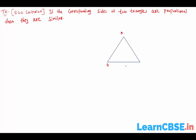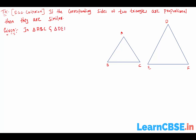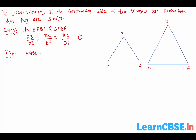Triangle ABC and Triangle DEF. Let me write the given. In triangle ABC and triangle DEF, AB by DE equals BC by EF equals AC by DF. That means the three sides of triangle ABC are proportional to the three sides of triangle DEF. So, required to prove: triangle ABC is similar to triangle DEF.